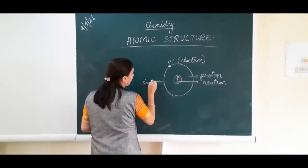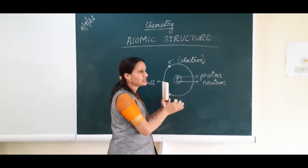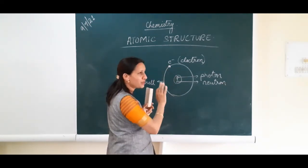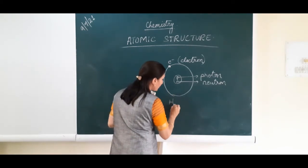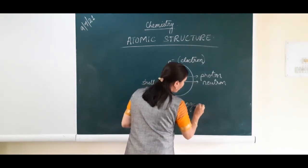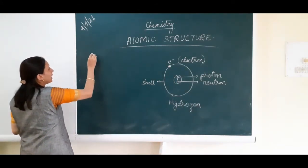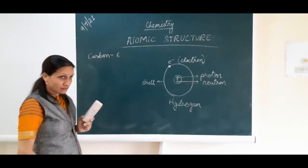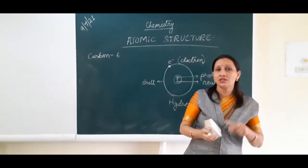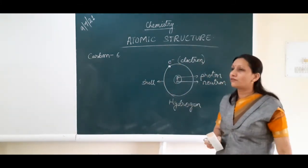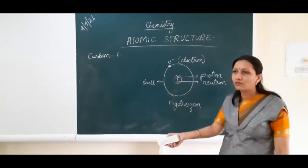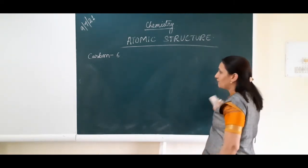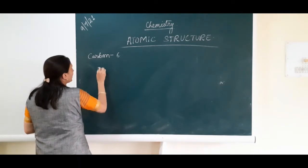This can be considered as the structure of hydrogen, because in hydrogen only one proton and one electron is present. But if you want to draw for another element like carbon, you should know its atomic number, which is 6. You must first know what is atomic number before drawing atomic structure.